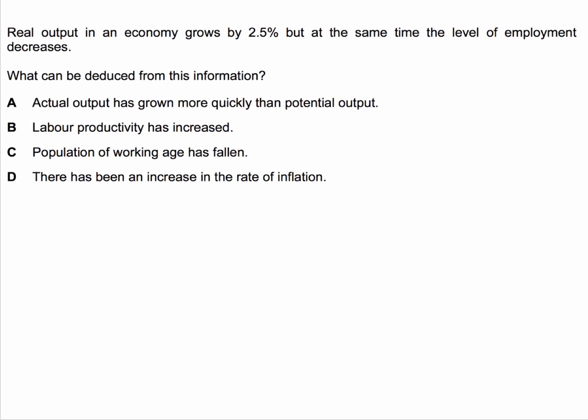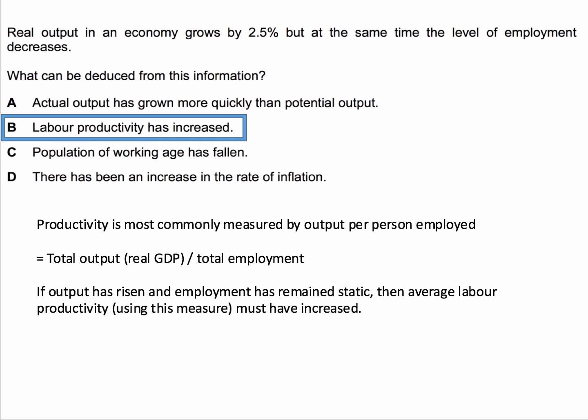So real GDP has gone up by 2.5% — that's output — but employment, the number of people in work, has gone down. Now, from that information alone, what can you deduce? You can deduce that B — labour productivity has increased. And here's the reasoning.